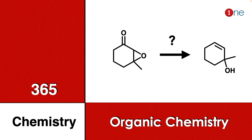Welcome to One Chemistry. This is the 365 Chemistry Series organic question. Here you have a functional group conversion which contains an epoxide and a halide. Finally, you have an alkene with an alcohol. You have to find the pathway of the organic conversions.